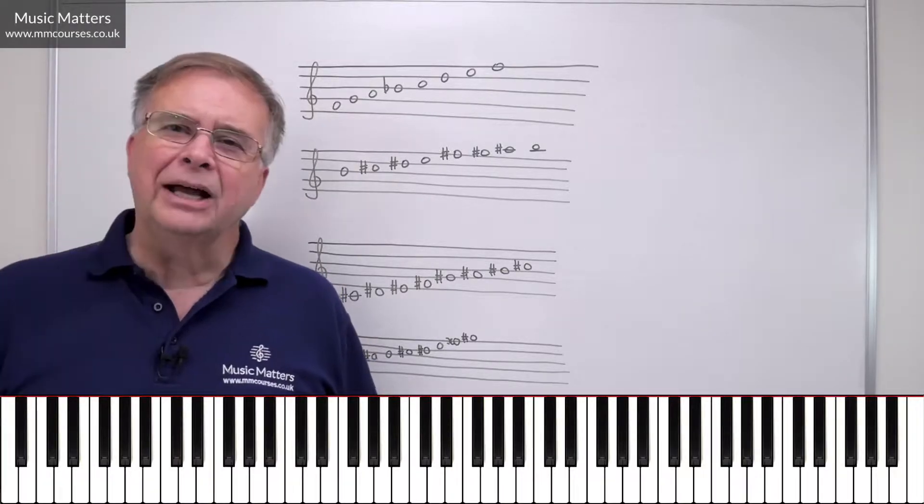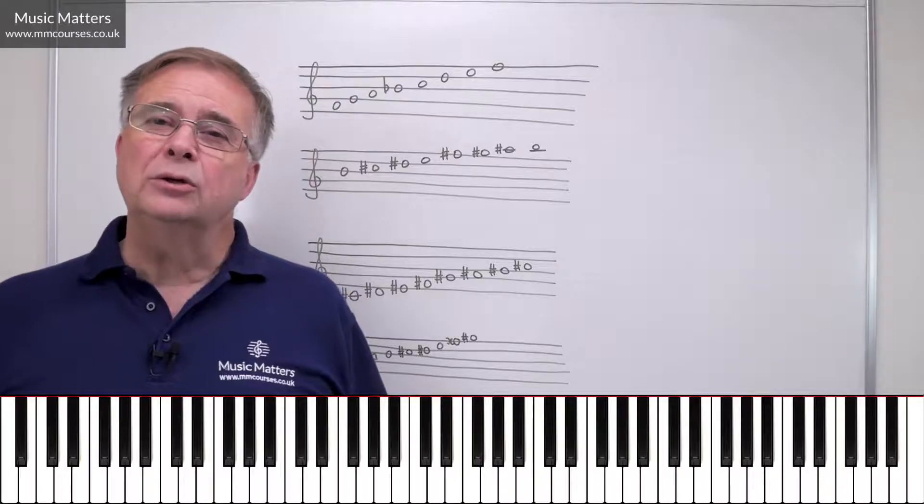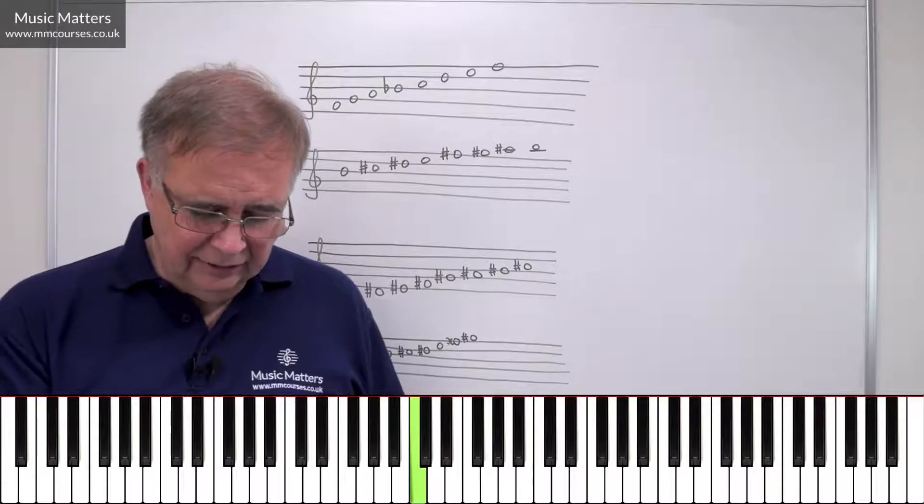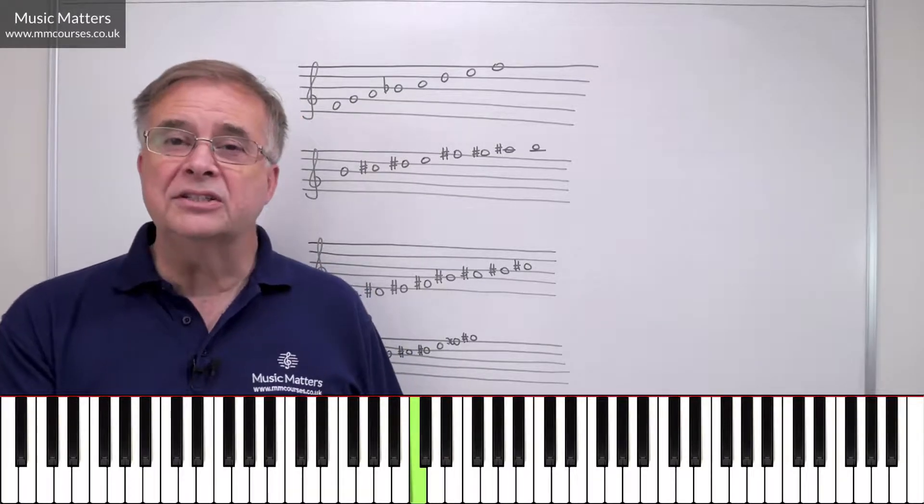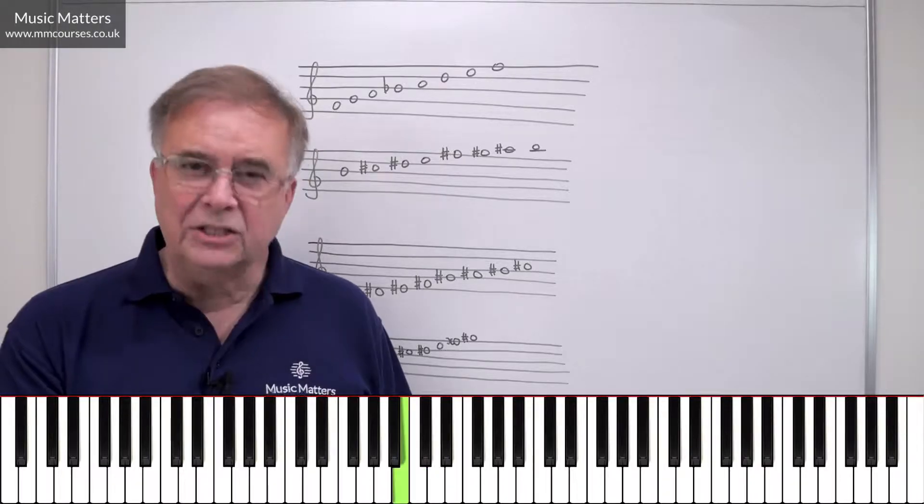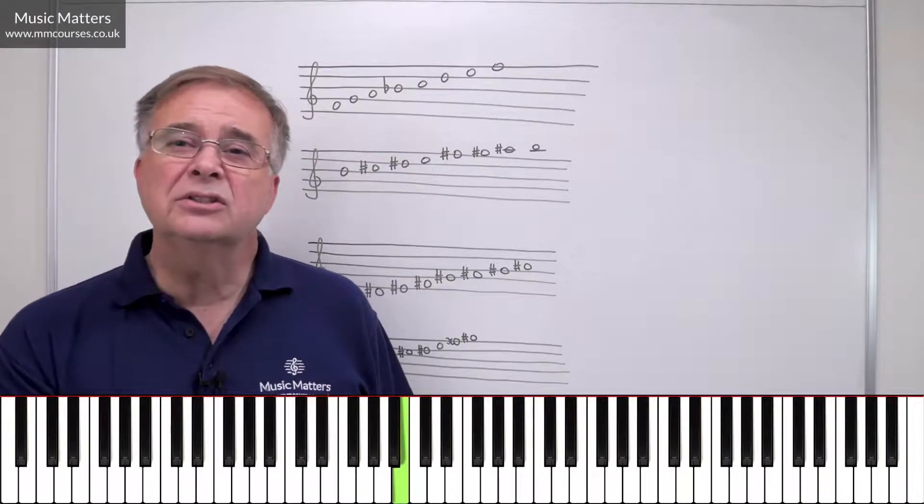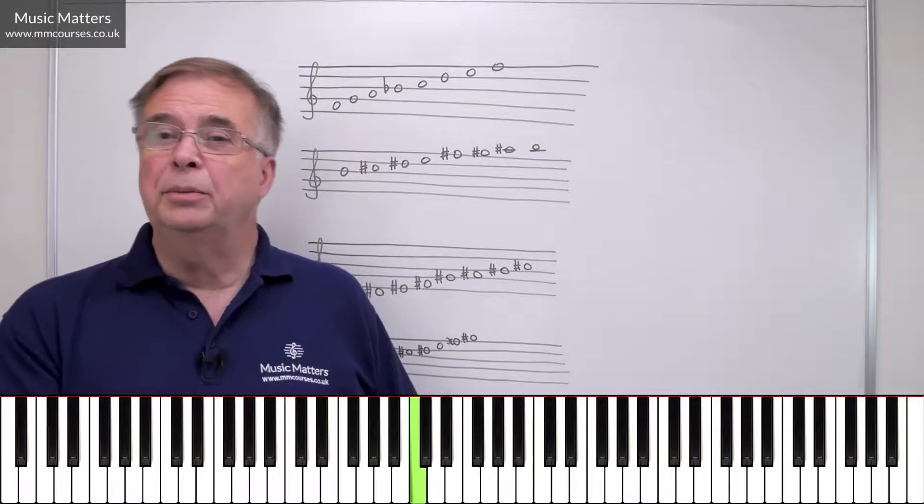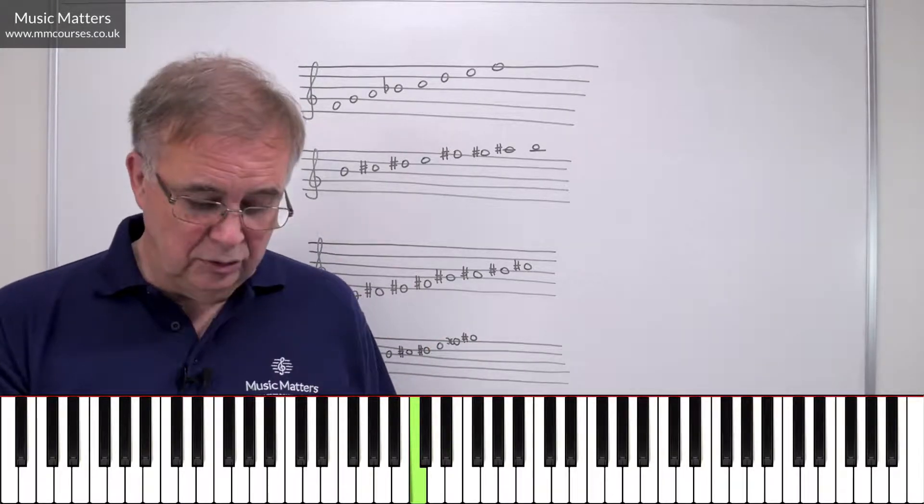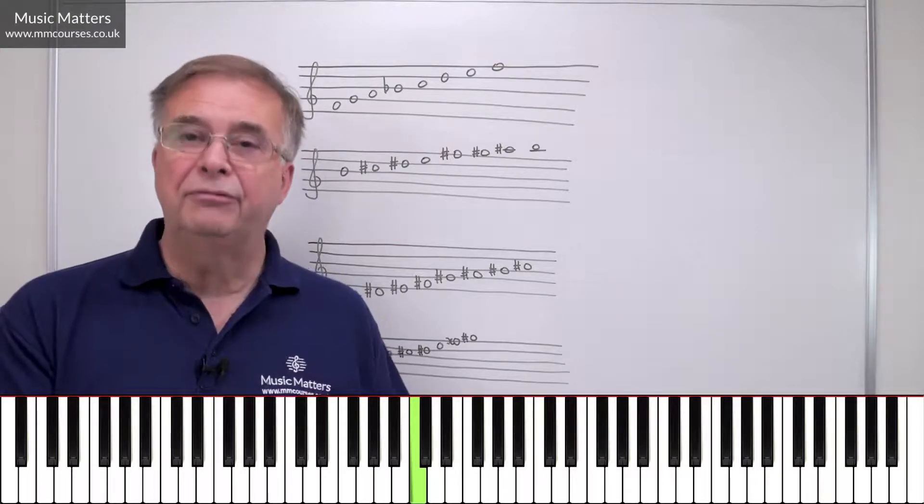And the first thing to say about it is that every note has got more than one name. So if we take the note C, well, most of us know this is C, but it could be B-sharp, because there's B just below it, and the note C is a semitone above it. So apart from being C, it's also B-sharp.